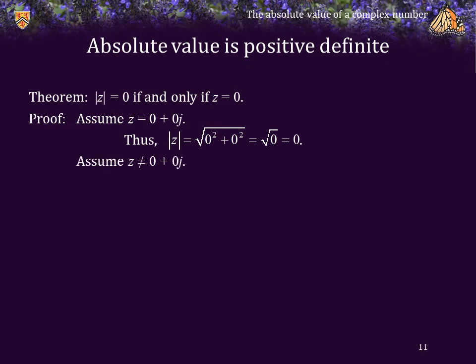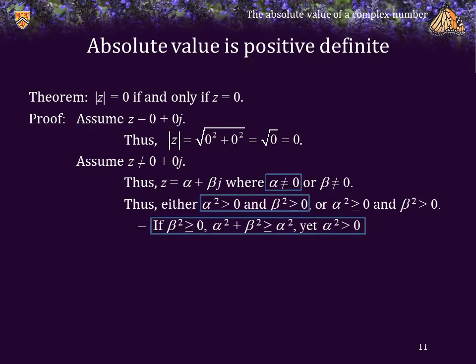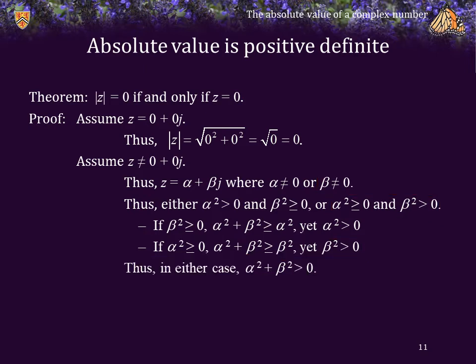Let's assume that z is not equal to 0. In that case, z is equal to alpha plus beta j, where either alpha is not equal to 0, or beta is not equal to 0, or both. If alpha is not equal to 0, then alpha squared must be greater than 0. Alternatively, if beta is not equal to 0, beta squared must be greater than 0. In the first case, where alpha is not equal to 0, beta squared is greater than or equal to 0; adding alpha squared to both sides, alpha squared plus beta squared is greater than 0. In the second case, where beta is not equal to 0, we add beta squared to both sides of alpha squared greater than or equal to 0, and because beta squared is greater than 0, alpha squared plus beta squared must also be greater than 0. In either case, alpha squared plus beta squared is greater than 0.